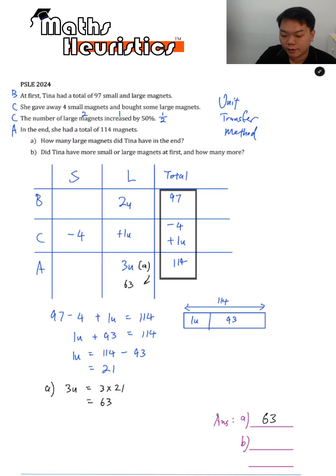Then for part B. Did Tina have more small or large magnets at first? And how many more? To deal with this, we can simply find out the value of two units first. Okay, that's two times 21 will give you 42. So if you have 42 large at first, you minus that off. From the total, you will get 55 small over here. Then 55 minus 42 will give you 13. So you had more small magnets and there were 13 more at first.